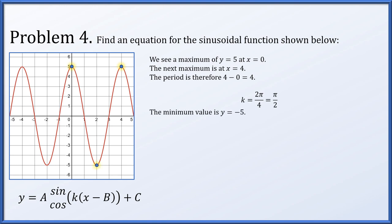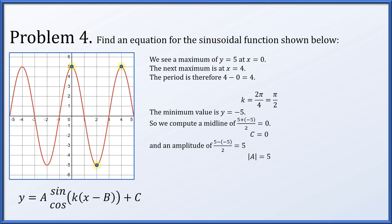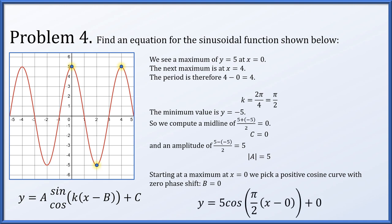The minimum value is y equals negative 5. The midline c is the average of max and min: (5 plus negative 5)/2 equals 0. The amplitude is (5 minus negative 5)/2 equals 5. Since there is a maximum at x equals 0, we model with a cosine with a positive coefficient and no phase shift (b equals 0). The equation is y equals 5 cosine(π/2 · x).